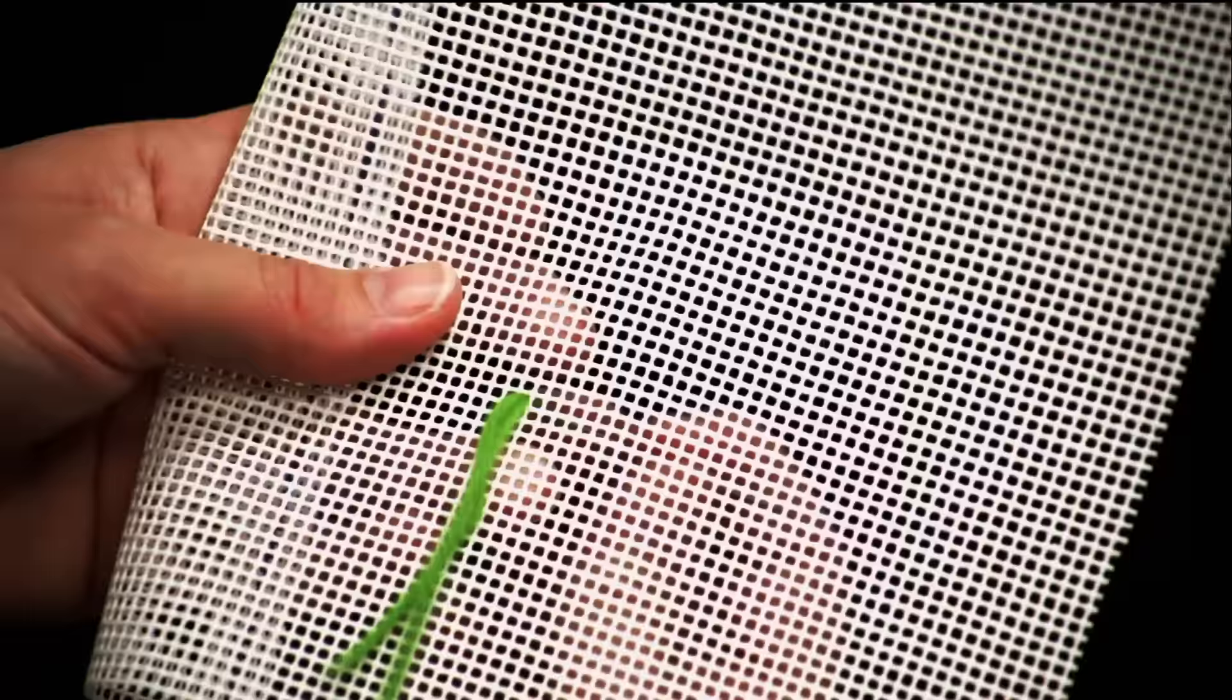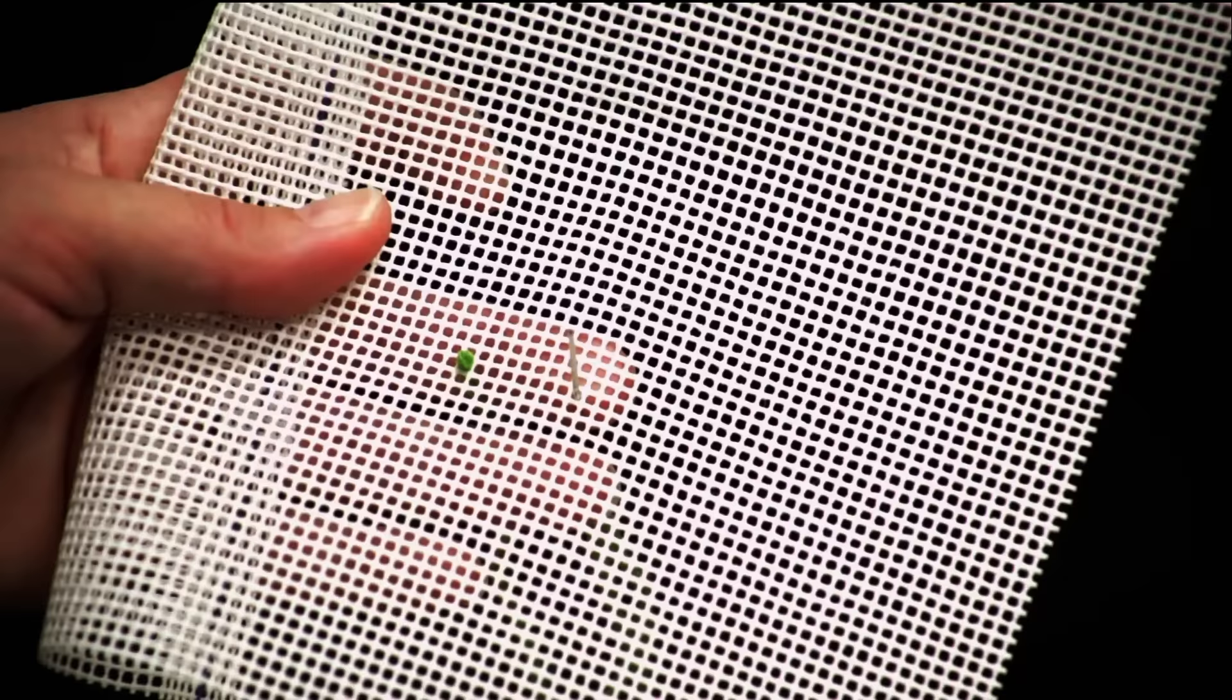Victorian Cross Stitch. Place your waste knot on top of your canvas roughly an inch from where you plan to begin stitching. Enter the canvas from the bottom left-hand side of the canvas.